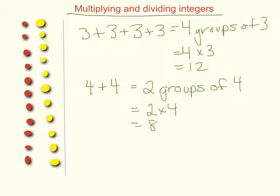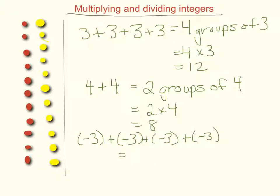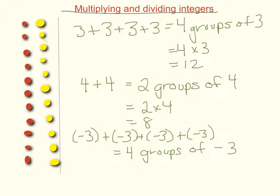So what happens then when we have negative 3 plus negative 3 plus negative 3 plus negative 3? We have 4 groups of negative 3. We saw 4 groups of 3 up here as 12, but this time it's negative 3. So we can make an assumption — what do you think is going to happen? It won't be 12 this time. If we have 4 groups of positive 3 and we're using the opposite integer of negative 3, what do you think is going to happen to the answer?